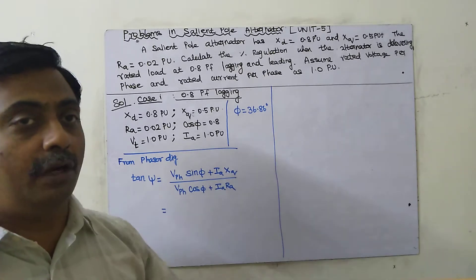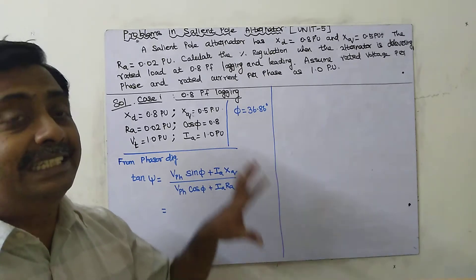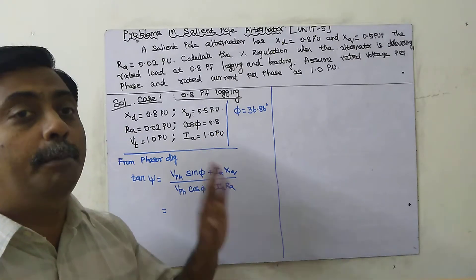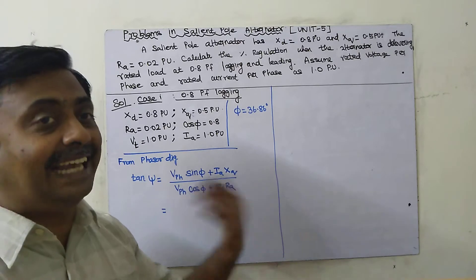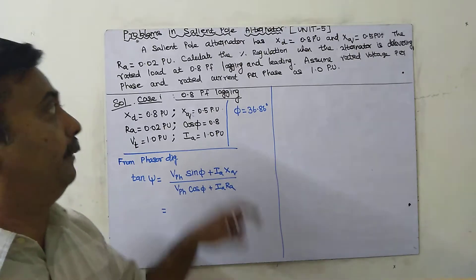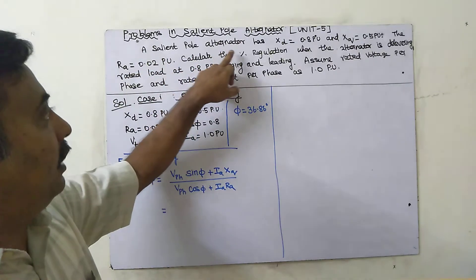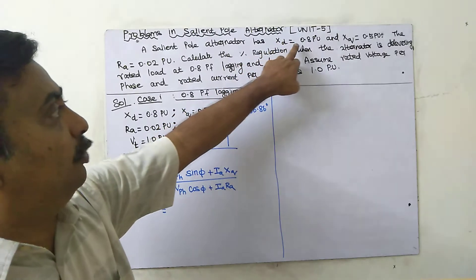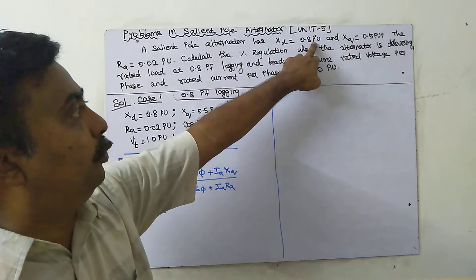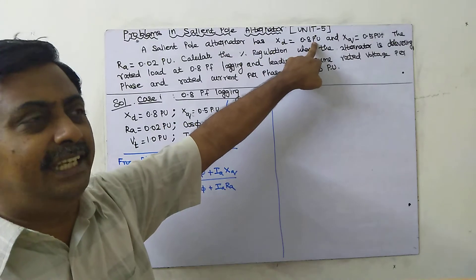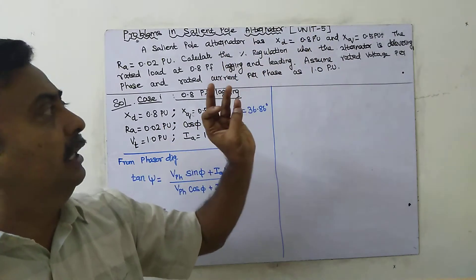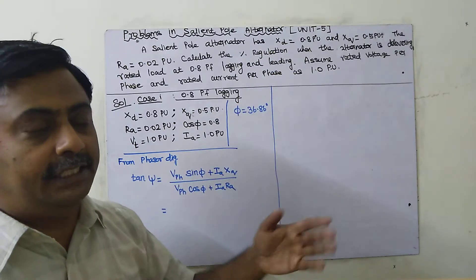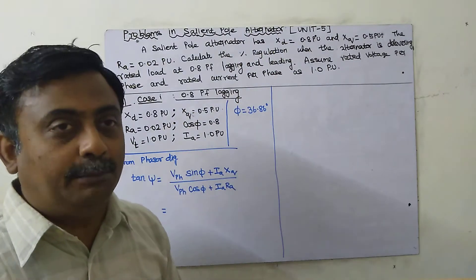Now we are going to see how to find the voltage regulation for a salient pole alternator, where the poles are projected. The salient pole alternator has xd (direct axis reactance) equal to 0.8 per unit. Per unit means we use uniform values across different quantities.